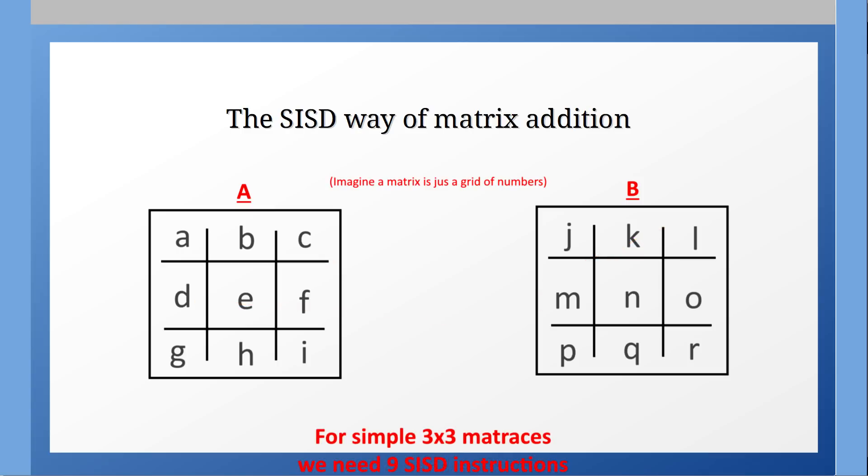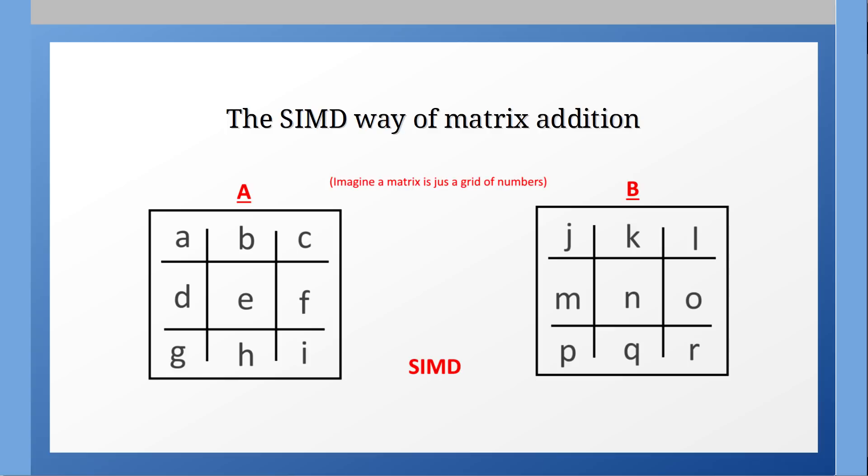So the number of instructions executed would be the number of elements in the matrix. However with SIMD a GPU can with a single instruction multiply multiple numbers together like this.